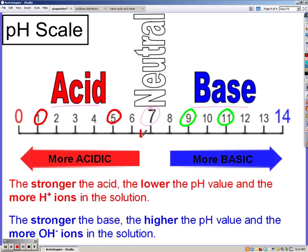If you have a pH of 6.5, what is it - an acid, a base, or neutral? If you said an acid, you are correct, because anything less than 7 is an acid.